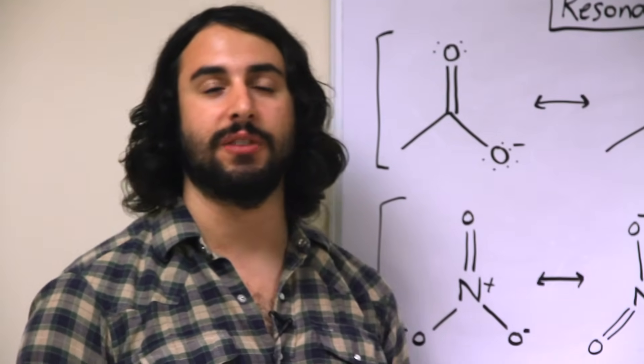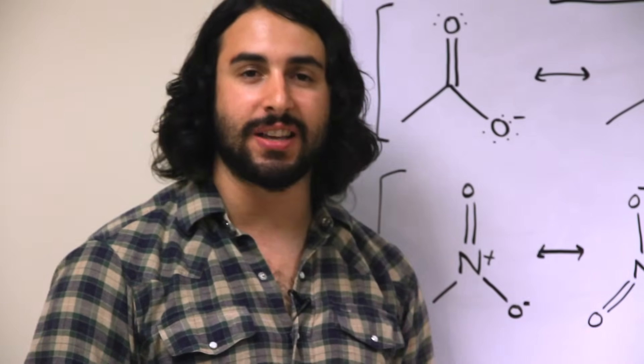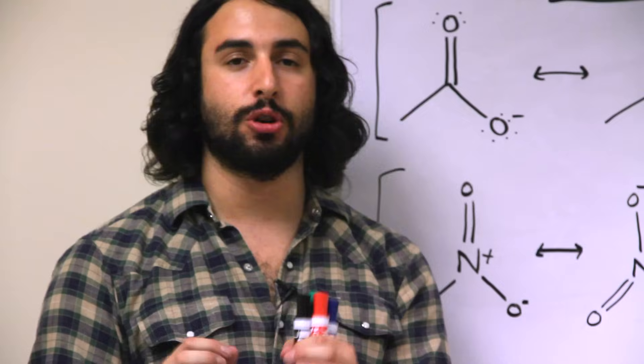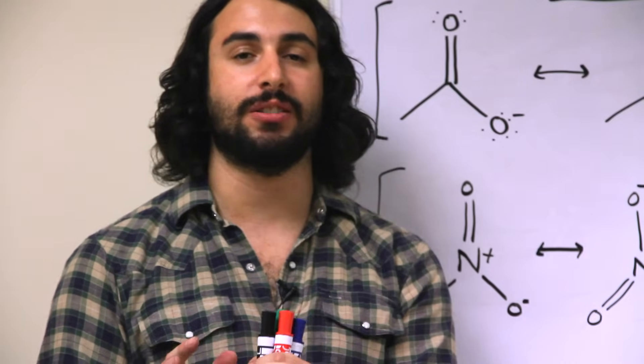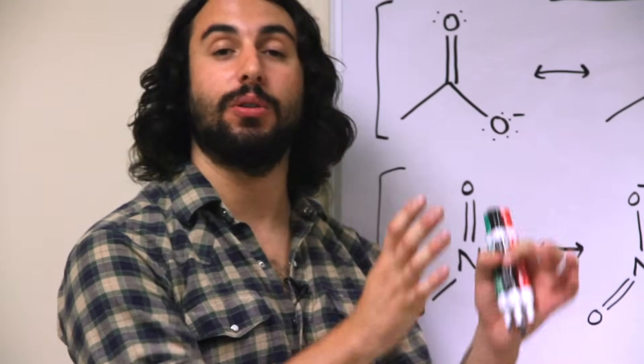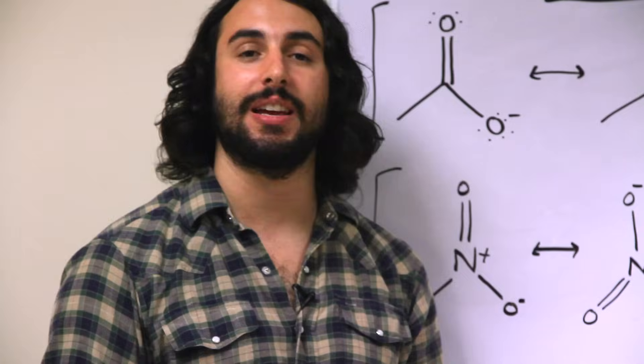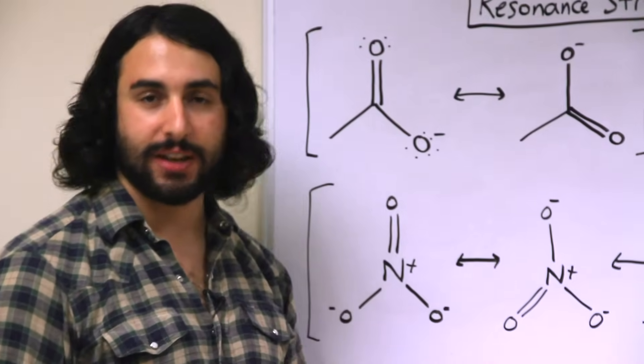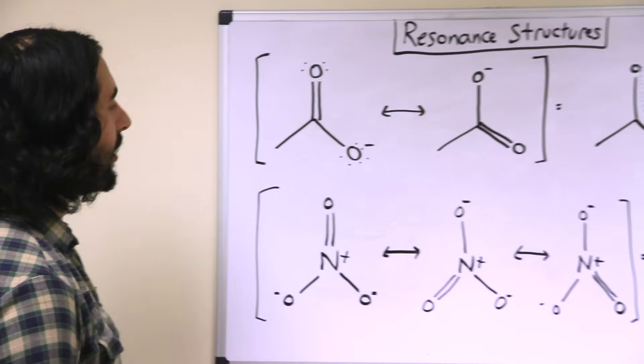A lot of books or teachers will give you a very strange way of using arithmetic and adding and subtracting all these things, but in my opinion this is the simplest way: just compare the number of electrons that an atom is contributing to a Lewis dot structure to its typical valence. And if they are not the same, that atom must bear a formal charge. Now that we understand that, let's take a look at some of these resonance structures.